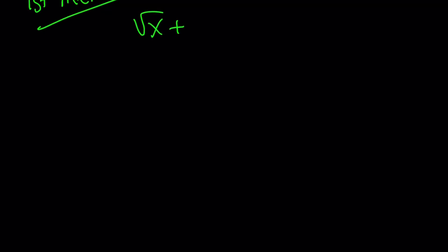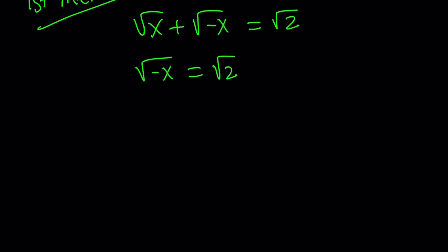For our first method, let me rewrite the original equation: square root of x plus square root of negative x equals square root of 2. I'm going to isolate square root of negative x and write it as square root of 2 minus square root of x. When you have a radical, especially more than one, you want to isolate one of them and square both sides.